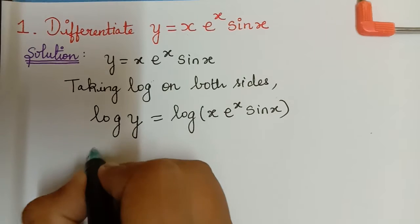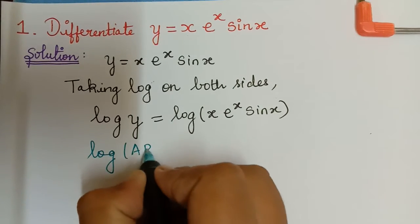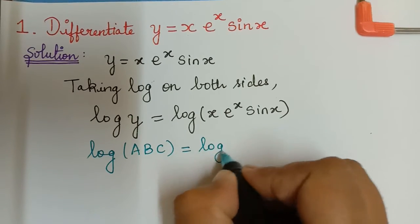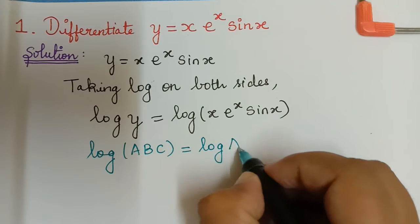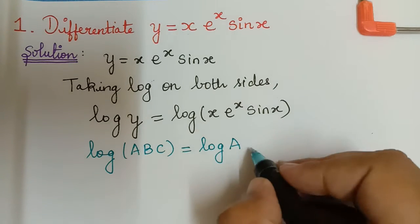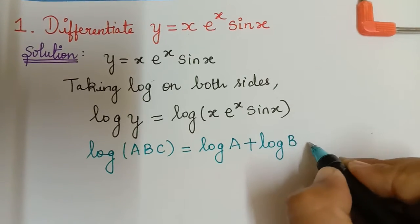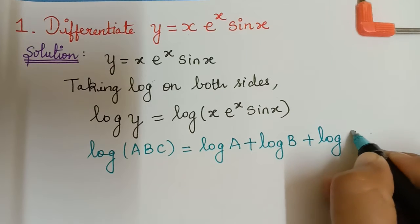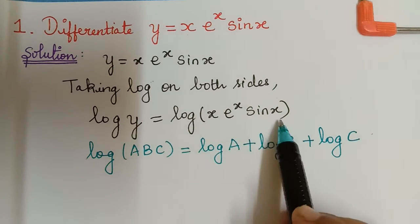By the formula of logarithm, log of three terms which are in product will be equal to the sum of logarithm of each term taken separately. That is, log of abc will be equal to log a plus log b plus log c. We will be using this logarithmic formula on the right hand side.